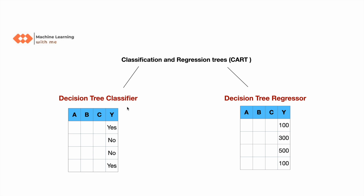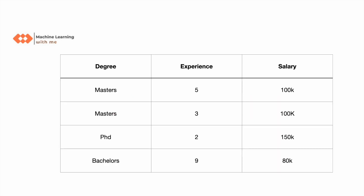A decision tree is very similar to how our mind works to solve a problem. For example, if we have data with degree, experience, and salary, you can intuitively say that someone with a PhD has a higher salary compared to others. With just three columns and four rows it's easy, but what if you have 50 columns and many rows?